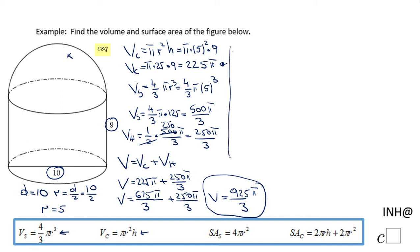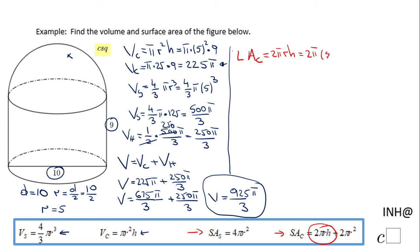Now we move to the second part, finding the surface area of this composite shape. We'll use parts of these two formulas. Starting with the cylinder — part of the surface area will be the lateral area of the cylinder, given by 2 pi r h. Replacing the radius with 5 and the height with 9, we get 2 times 5 times 9, which equals 90 pi. This is the lateral area of the cylinder.